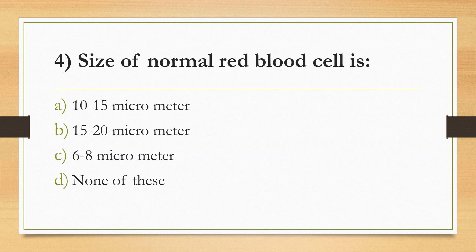Fourth Question: Size of a normal red blood cell — Option A: 10 to 15 micrometers, Option B: 15 to 20 micrometers, Option C: 6 to 8 micrometers, Option D: other. Answer is Option C: 6 to 8 micrometers. Variations in RBC size are described as hypochromic and hyperchromic, and abnormal shapes are referred to as poikilocytosis.